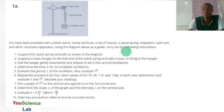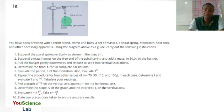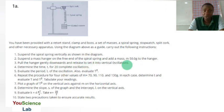I think this practical is going to be similar to the one they did in 2021, so the materials may be the same. Using the diagram above as a guide, carry out the following instructions: suspend the spiral spring vertically as shown in the diagram, then suspend a mass hanger on the free end of the spiral spring and add a mass M equal to 50.0 grams to the hanger. Pull the hanger gently downwards and release to set into vertical oscillation. Determine the time t for 20 complete oscillations. Evaluate the period T of the oscillation, and also evaluate T squared.